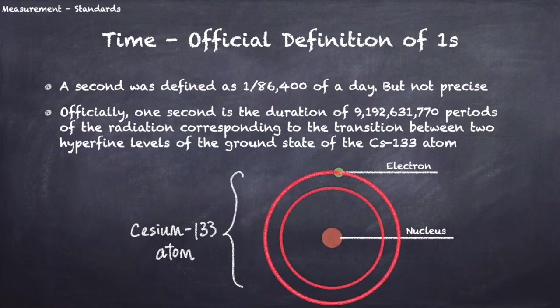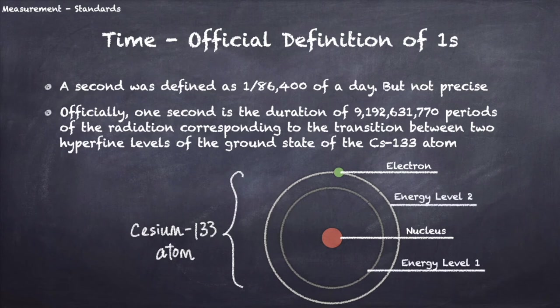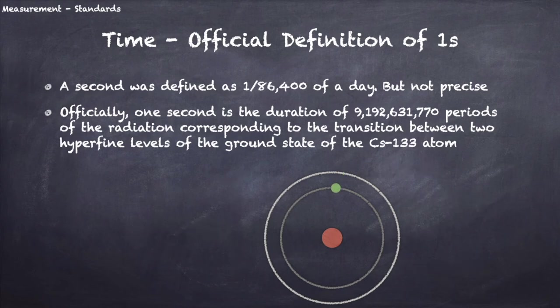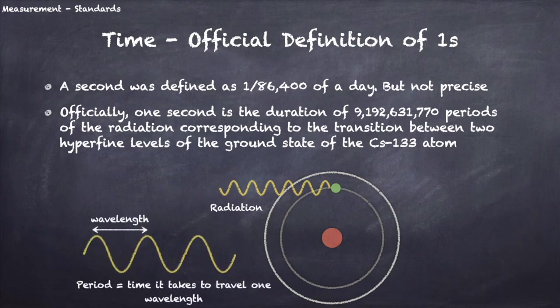These two big circles are the orbits for the electron. These orbits are also called energy levels. I call them energy level 1 and energy level 2. These two levels represent the two hyperfine levels mentioned here. Our electron right now is on energy level 2. It can make the transition to level 1 by releasing some radiation. Just like light, this radiation can be modeled as a wave. So this radiation has a wavelength too. The time it takes for the radiation to travel a distance of one wavelength is a period. About 9 billion of this period gives us a second.